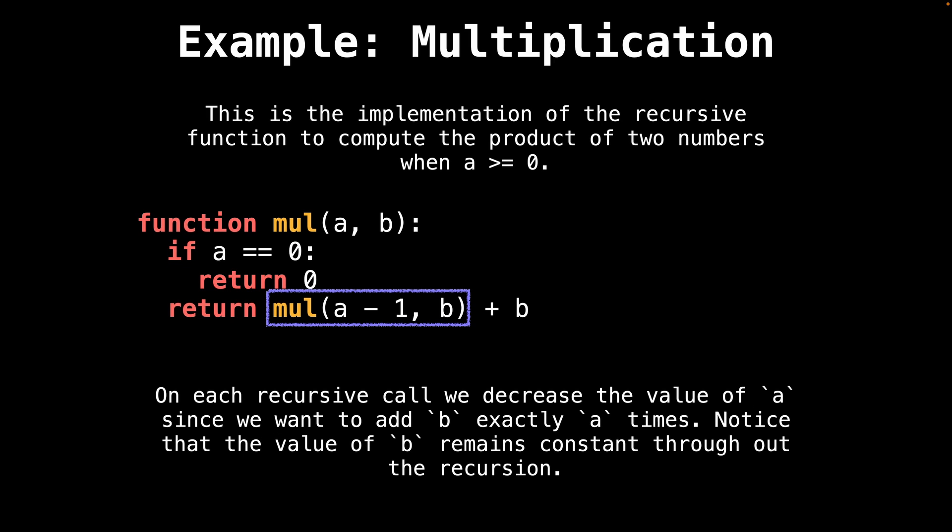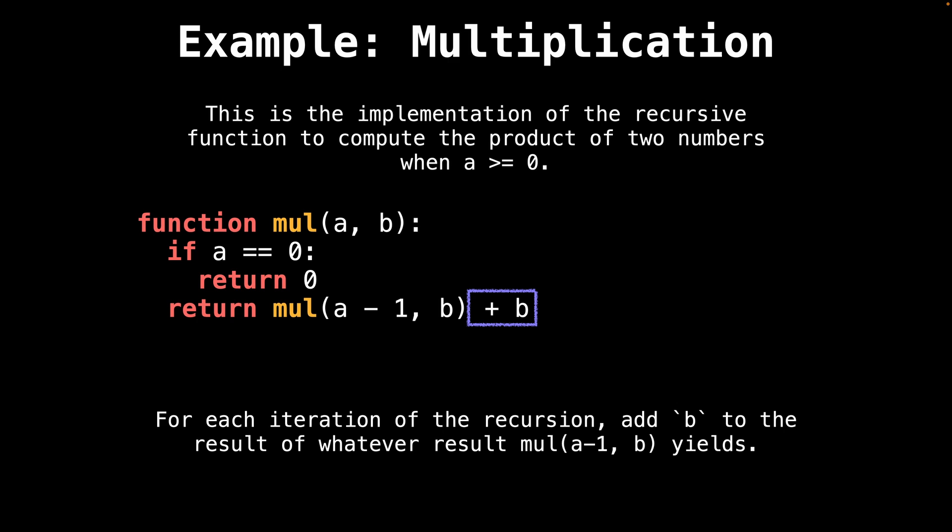On the last line, you see that we recursively call the multiply function. But notice that we decrease the value of a each iteration in the transition. This ensures that there are exactly a number of recursive calls. Something else to notice is that while decreasing the value of a each iteration, the value of b remains constant throughout the recursion. Lastly, for each recursive call, we add b to the final sum. Since we know we're only calling the recursive function a total of a times, this constitutes exactly a additions of b, which is the product of a and b.